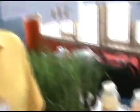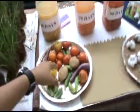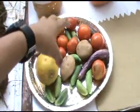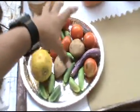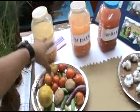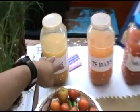This is our liquid biofertilizer made from vegetable waste. To prepare it, we take rotten vegetables, place them in a bottle, and store them for 4 months.